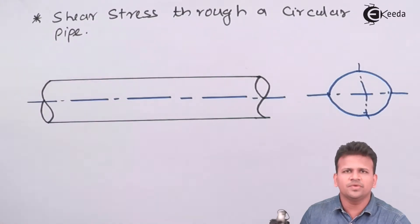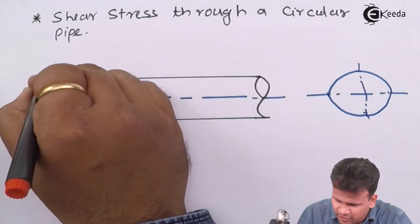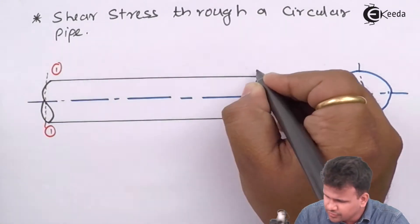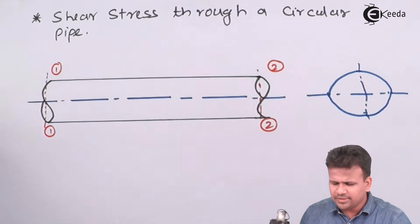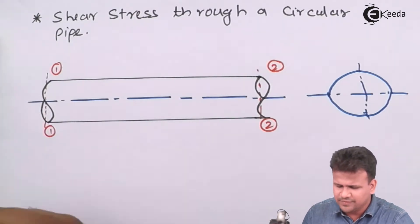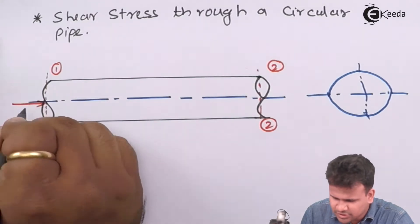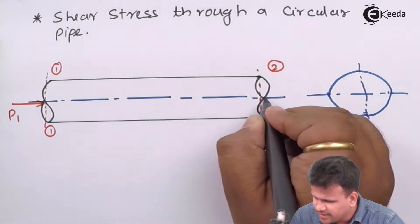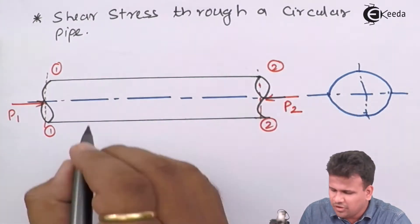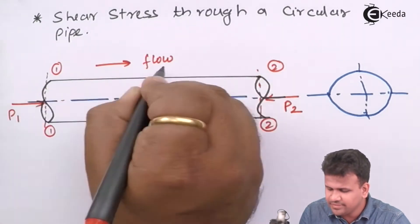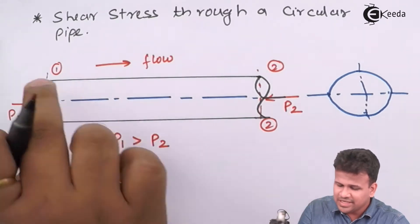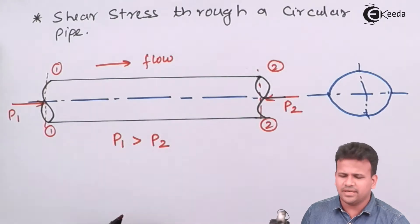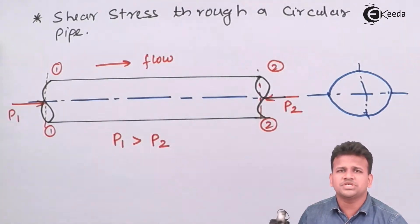Now, if it is having a laminar flow, it should have some inertial force which will drag it from section 1-1 to section 2-2. We consider the pressure at section 1-1 as P1 and the pressure at section 2-2 as P2. For the fluid to flow from section 1-1 to section 2-2, P1 should be greater than P2. If both pressures are equal, the fluid won't flow or the direction of flow might change.